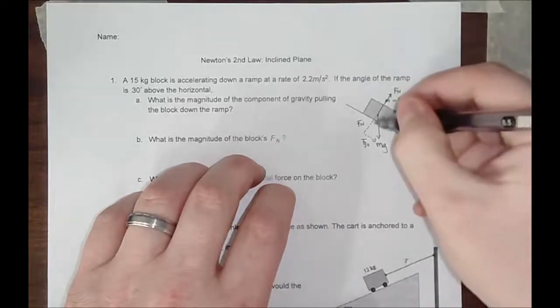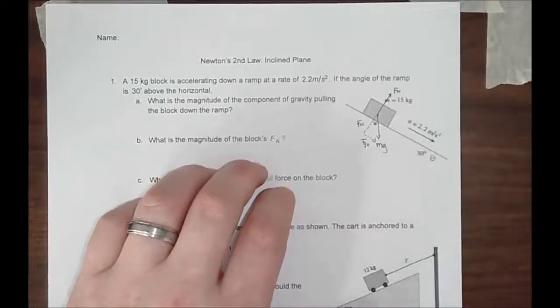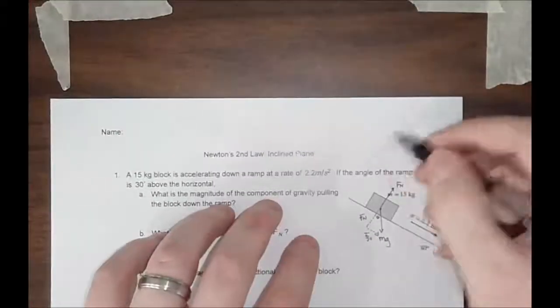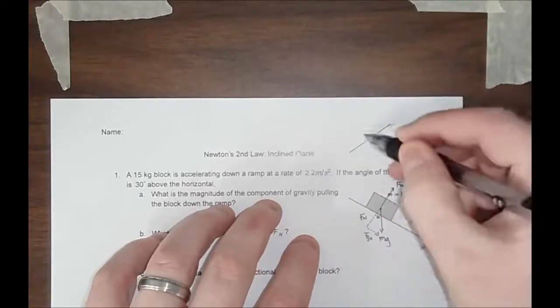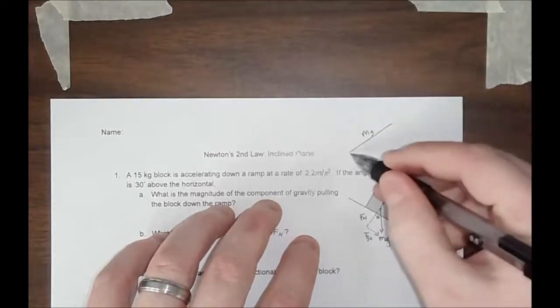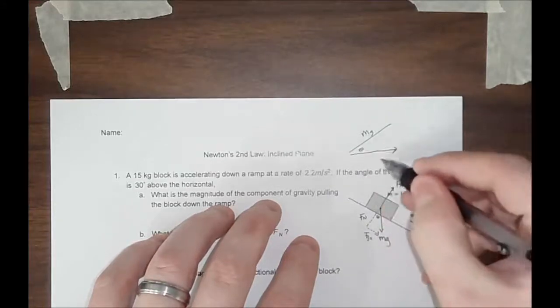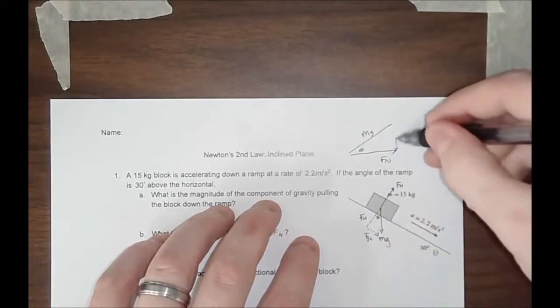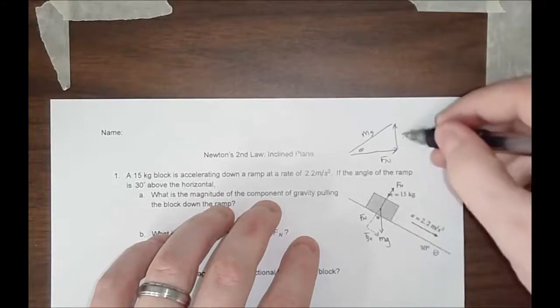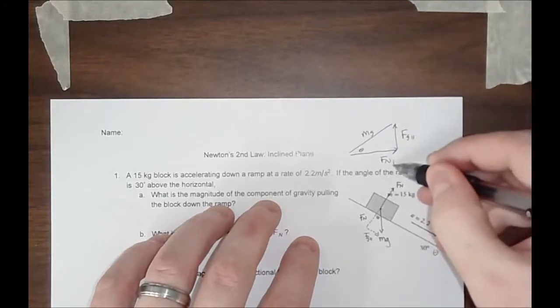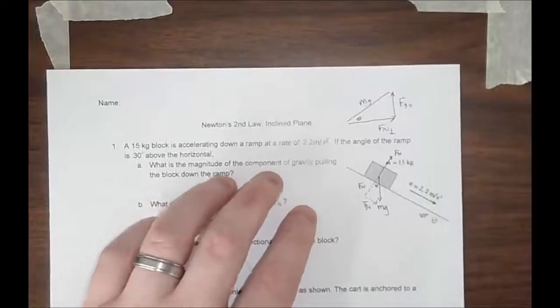When you draw this triangle, MG is your hypotenuse. This is our angle theta. This is FN. And this right here is our FG parallel. This could also be denoted as FN perpendicular.